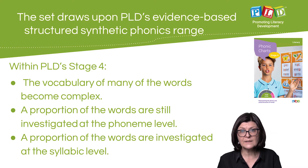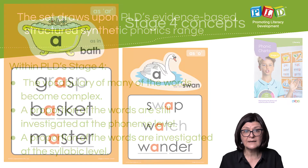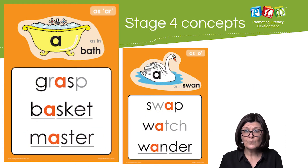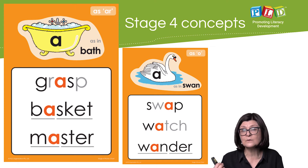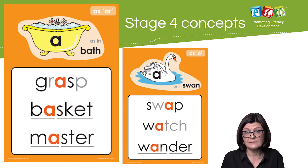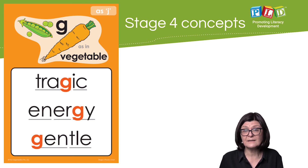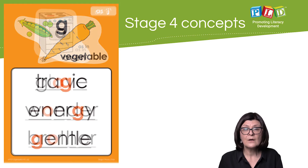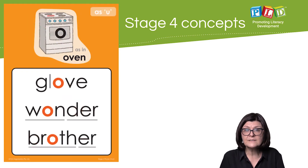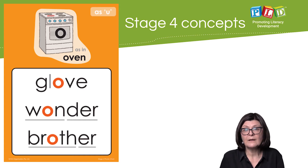Contained within this pack are Stage 4 concepts starting with 'a' with two different pronunciations in words — as the 'or' sound or also the 'o' sound. 'G' is explored with the pronunciation of the 'j' sound in these more complex words. The set of words presented with the 'o' spelling pronounced as 'a' are also covered.